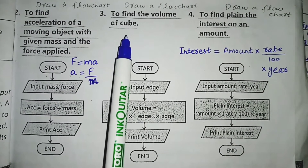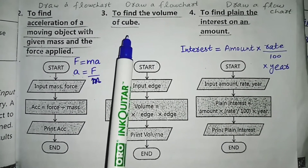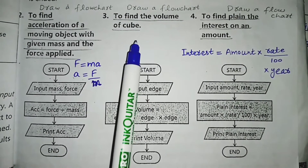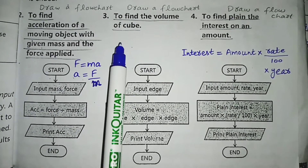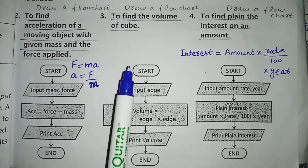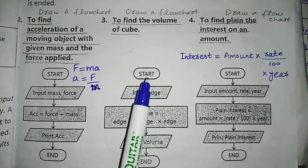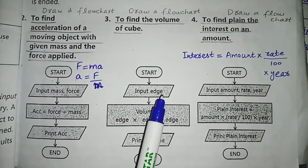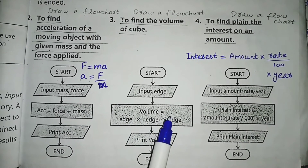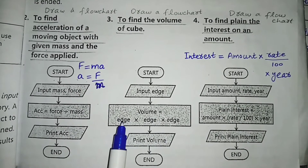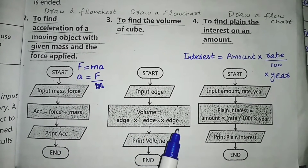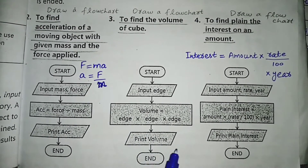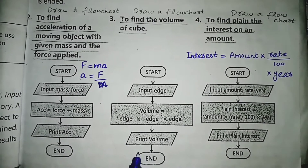The next flowchart is related to the volume of a cube. The formula for the volume of a cube is edge cubed — that means we multiply the edge three times. Following the same flowchart structure: start symbol, then input symbol where we enter the edge value, then the processing rectangle where Volume = edge × edge × edge is calculated, then the output parallelogram to print the volume, and finally the end of the flowchart.